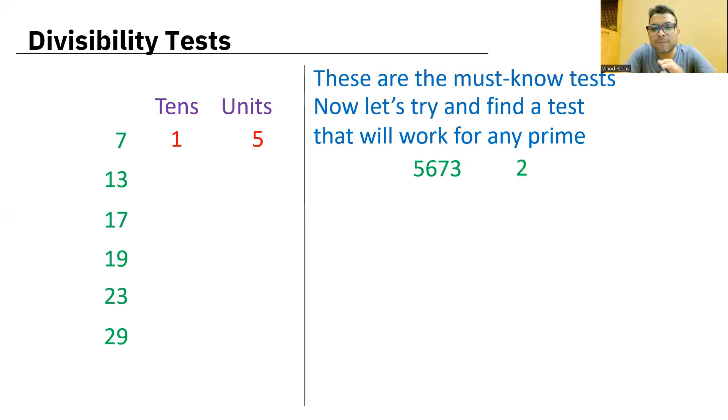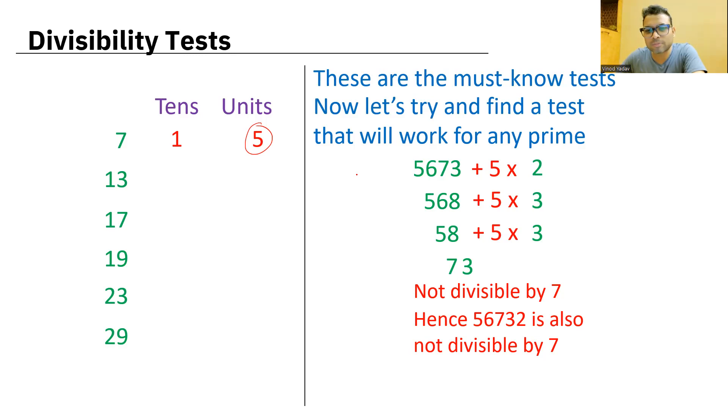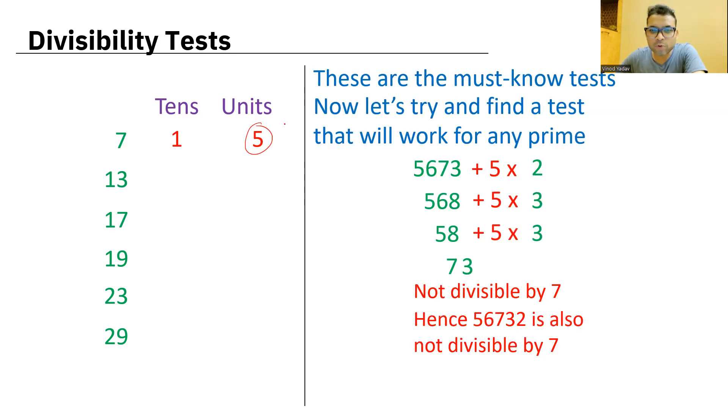So this is a number I want to test whether it is divisible by 7 or not. So first split the units place, multiply units place by 5 and add that number to the remaining part. So 5673 plus 10 is 5683. Still it is big enough. I'm not very clear. Again, do the same process. So I got 53, one more time to make it more comfortable. 58 plus 15, 73. Now it would be in a position to say 73 is not divisible by 7. So this is the procedure, friends. So this basically 5673, that bigger number, is not divisible by 7 for sure. This 5 is called a seed number.